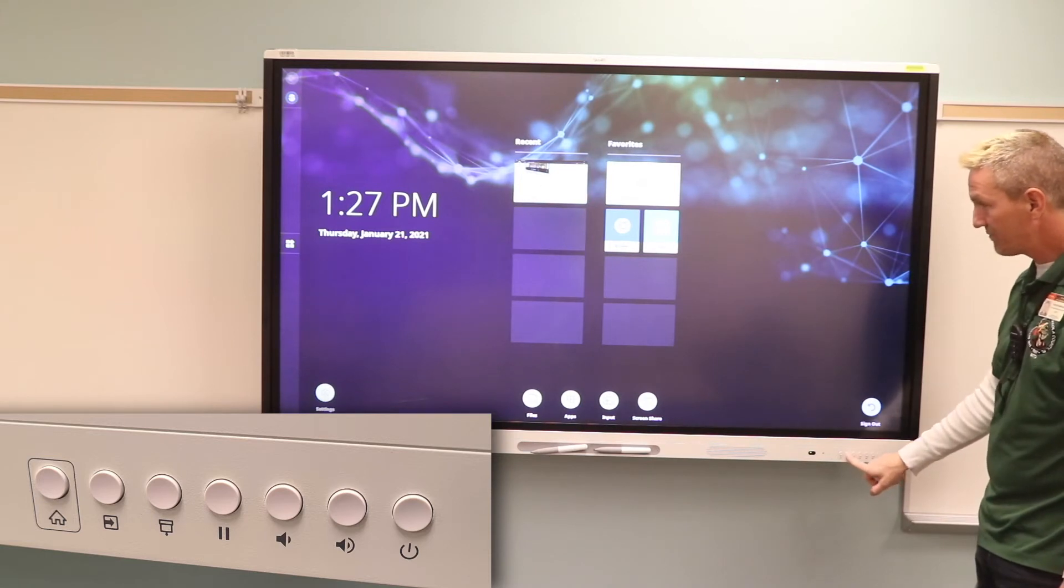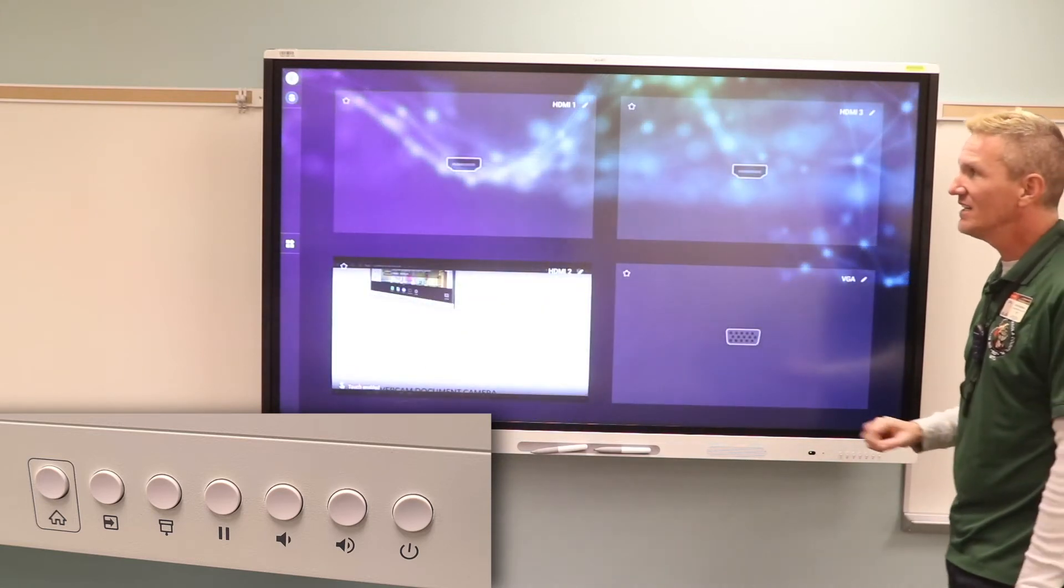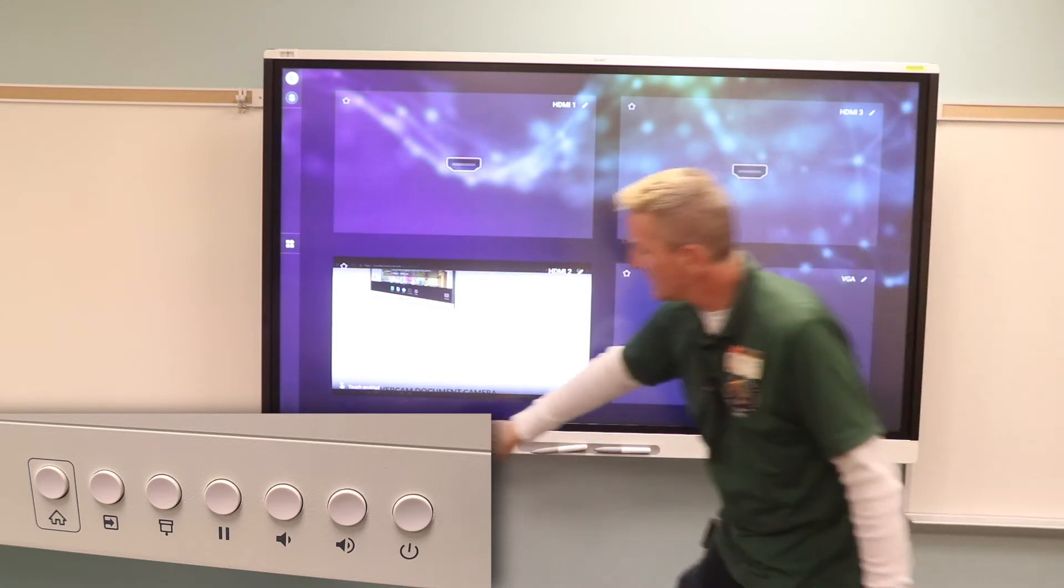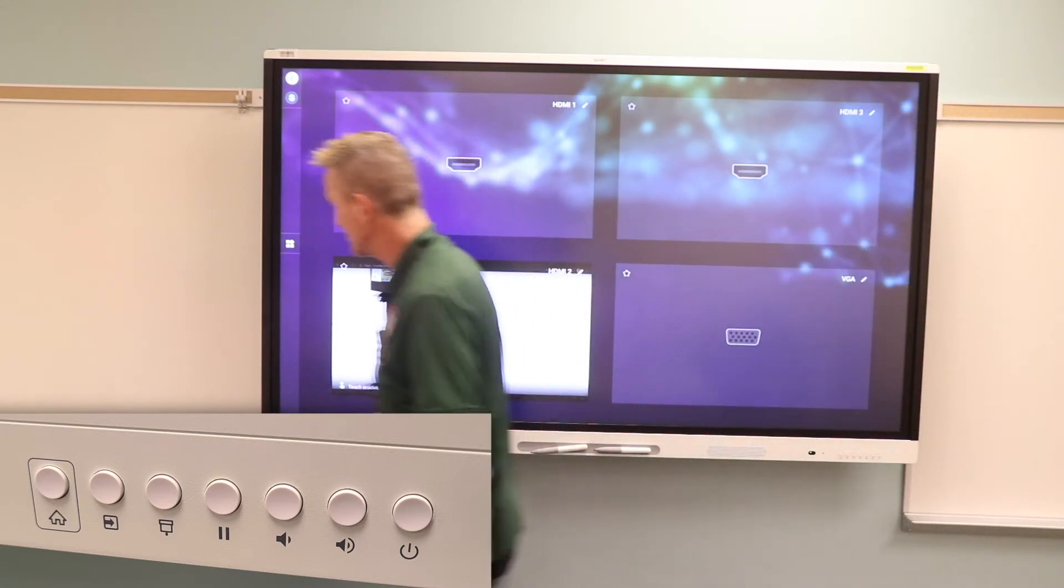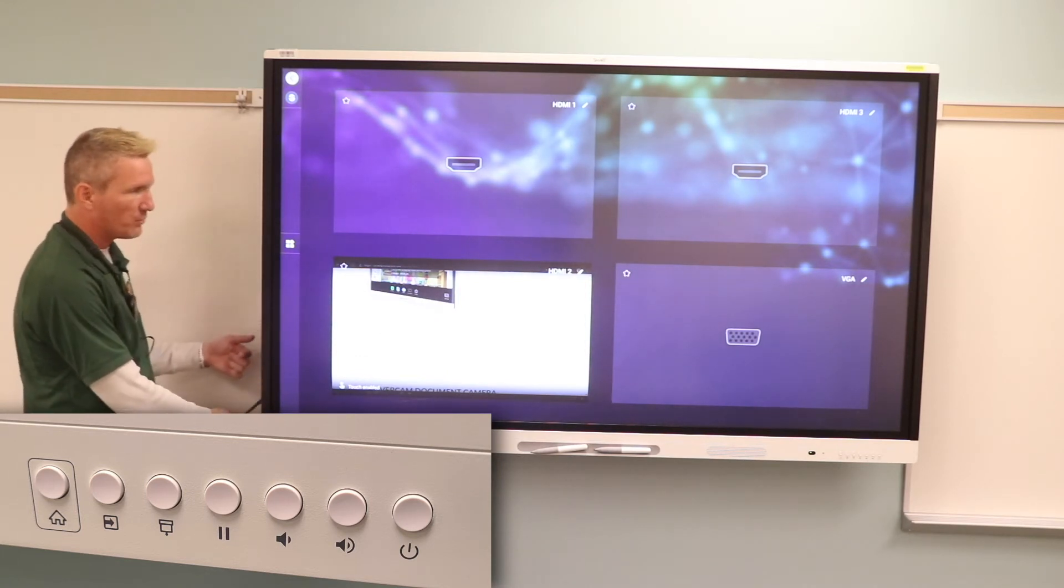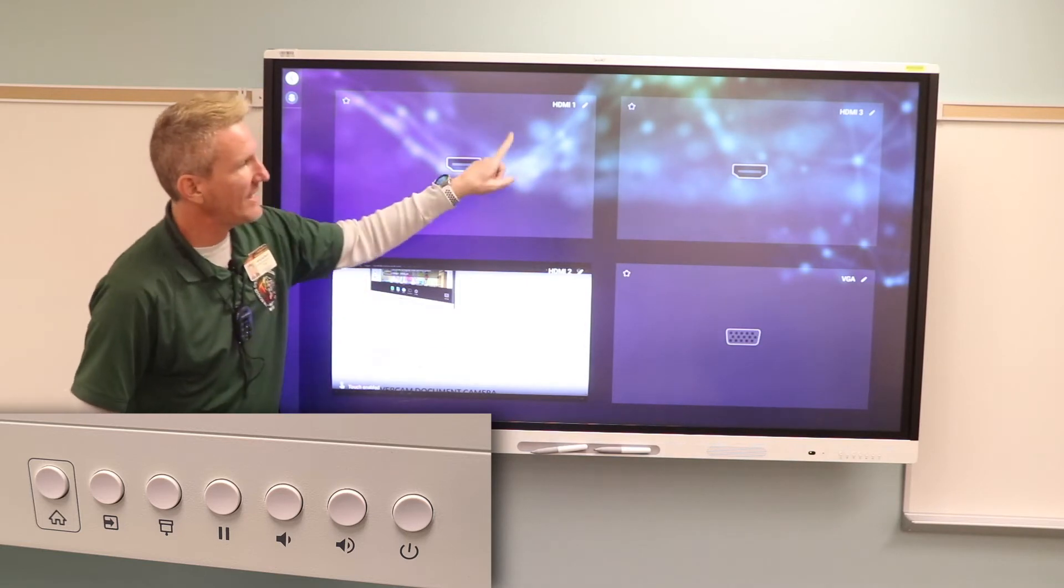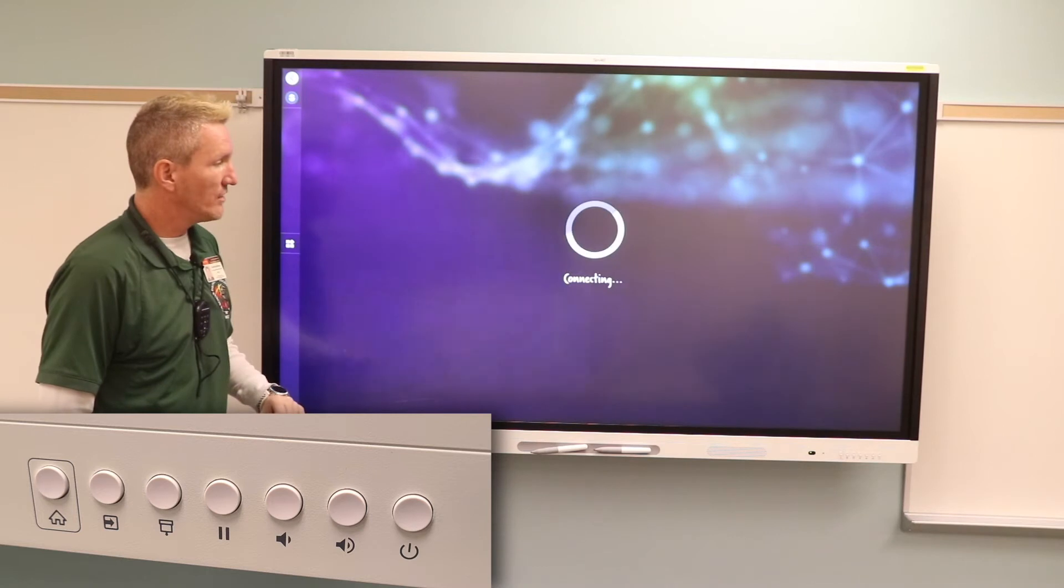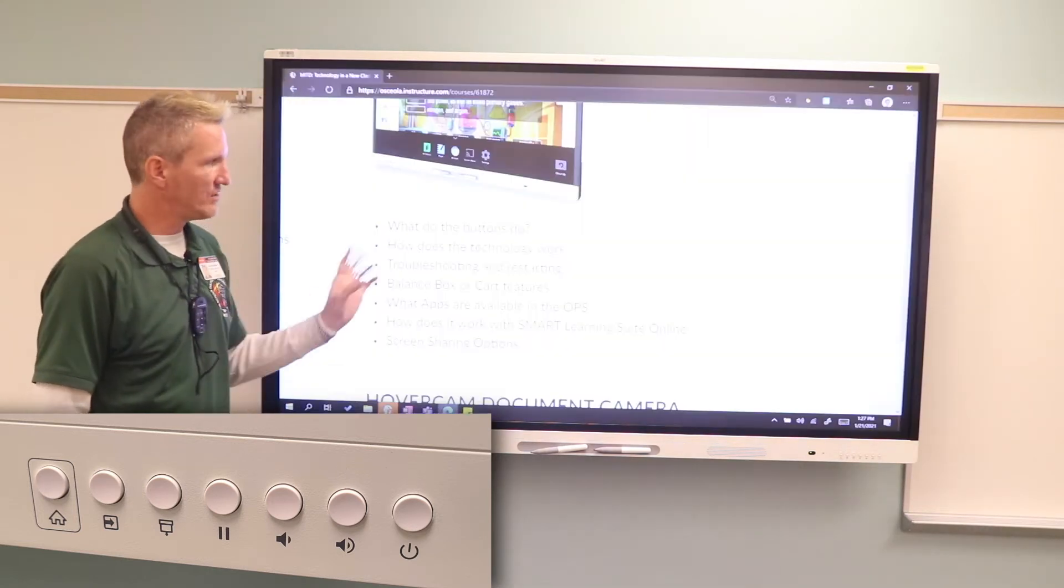The second button, when I press that, takes a look at all the inputs that are on the back of this. I have an input here on the front that I can plug stuff into. I've got some wires connected here on the side in HDMI 2 and HDMI 1. So depending on what I have plugged into the board, I can quickly choose that input and it switches very quickly.